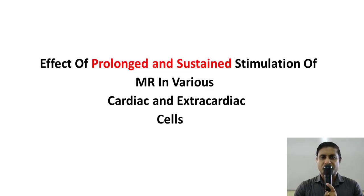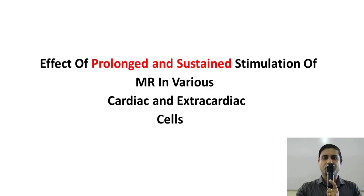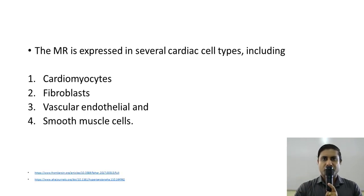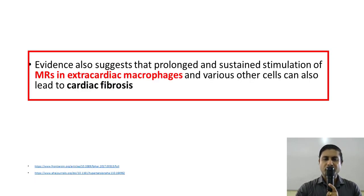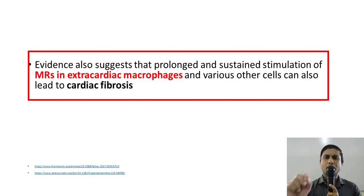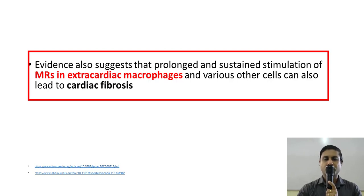Now let us understand the effect of prolonged and sustained stimulation of mineralocorticoid receptors in various cardiac and extracardiac cells. Mineralocorticoid receptors are present in the epithelial cells lining the collecting duct of the kidney, where stimulation causes increased reabsorption of sodium and water, thereby increasing preload. Mineralocorticoid receptors are also present in various cardiac cells, including cardiac myocytes, fibroblasts, vascular endothelial cells, and vascular smooth muscle cells, as well as extracardiac cells — notably extracardiac macrophages. When these receptors are stimulated in a prolonged and sustained manner, they also contribute greatly to fibrosis of the heart.